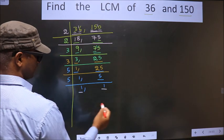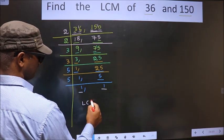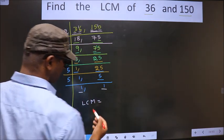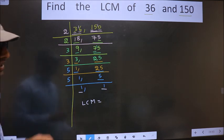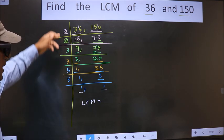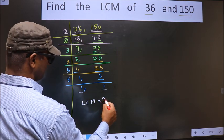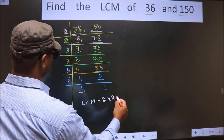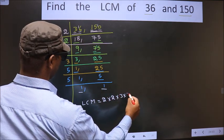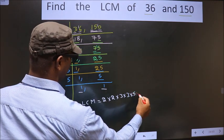Now we got 1 in both places. So now our LCM is the product of these numbers. That is 2 times 2 times 3 times 3 times 5 times 5.